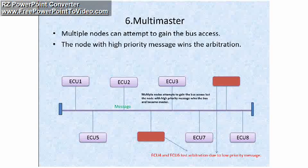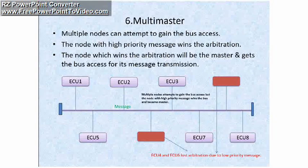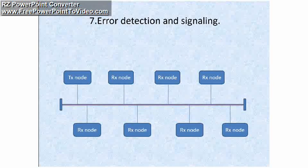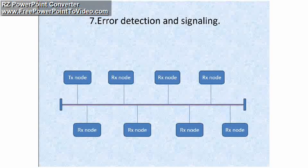Multiple nodes can attempt to gain bus access; the node with the highest priority message wins the arbitration, becomes the master, and gets bus access for its message transmission. The next property of the CAN protocol is error detection and signaling. In a CAN network, any node can detect an error in the transmitted message and inform about it by sending an error frame.